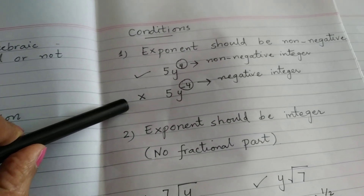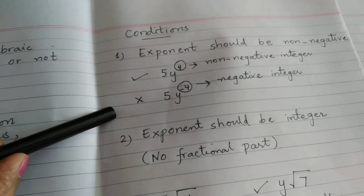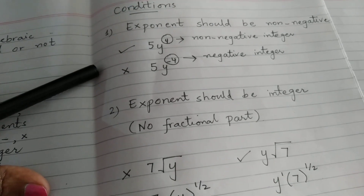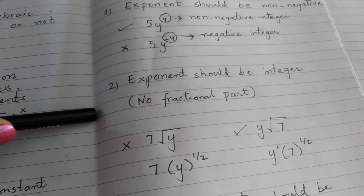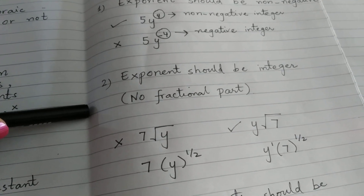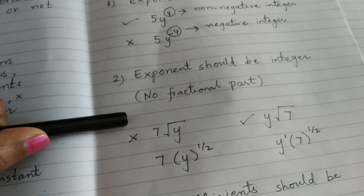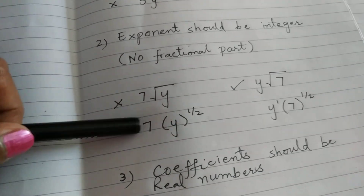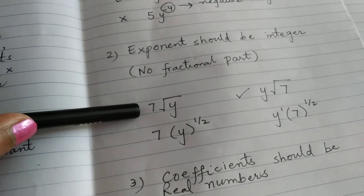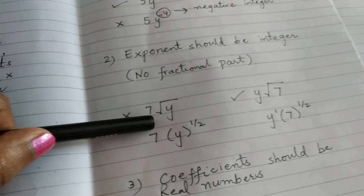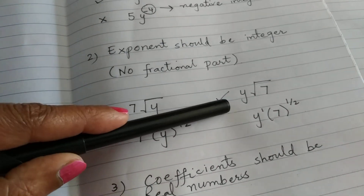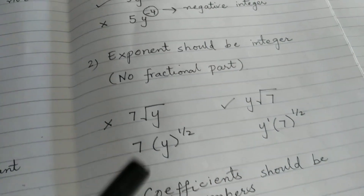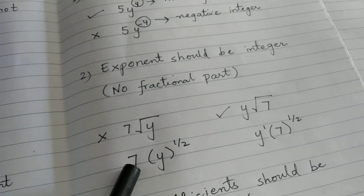This is the first condition to identify polynomial and non-polynomial expressions. The second condition is that the exponent should be an integer — no fractional part. Here we have two examples: 7 times the square root of y, and y times the square root of 7. The exponent should be an integer.